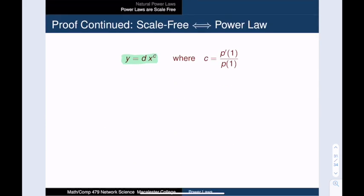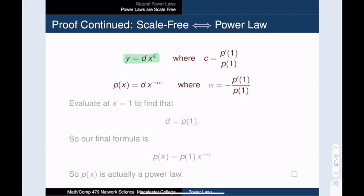All that's left to do is fill in the proper values for the constants c and d. And we already know that c is equal to p'(1) divided by p(1). To express this as a power law, we just take α to be -c. And finally, we can quickly find d by plugging in x = 1. We find that d is actually equal to p(1). And so our final formula is p(x) = p(1)x^(-α), where α = -p'(1)/p(1). And so we have shown that if a distribution is scale-free, then it must be a power law.